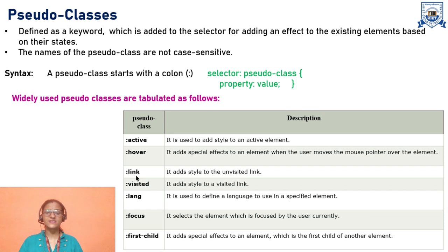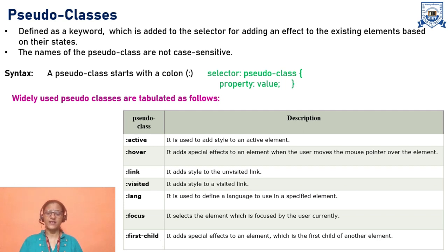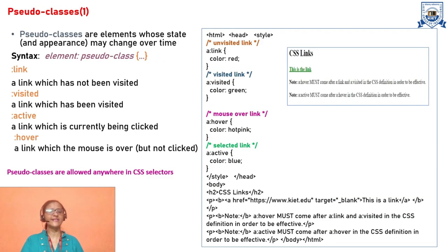Different pseudo classes include: active — used to add a style to an active element; hover — adds a special effect when the mouse pointer moves over the element; link — adds style to an unvisited link; visited — adds style to a visited link (we often observe that a visited link's color changes); lang — used to define a language to use in a specified element; focus — selects the element currently focused by the user; first-child — adds a special effect to an element that is the first child of another element.